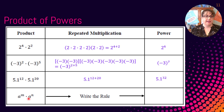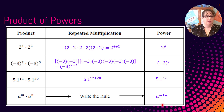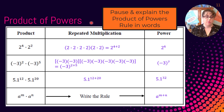So what our rule is saying is: if I am multiplying two exponents with the exact same base, I can just take the exponents and add them. So this is our rule — if the bases are the same and they're being multiplied, then I can add the exponents. This is called the Product of Powers.